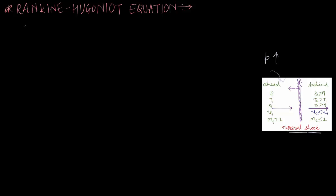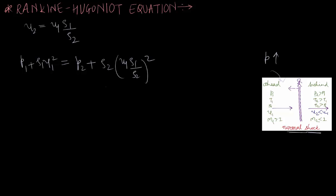From the continuity equation we know that u2 equals u1 times rho1 divided by rho2. From the momentum equation we know that p1 plus rho1 u1² equals p2 plus rho2 u2². Substituting u2, we can find that u1² equals (p2 minus p1) divided by (rho2 minus rho1) times (rho2 by rho1).